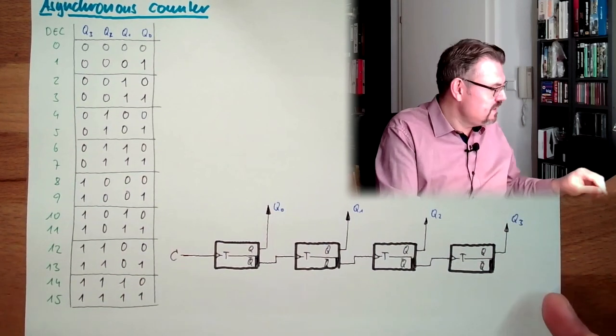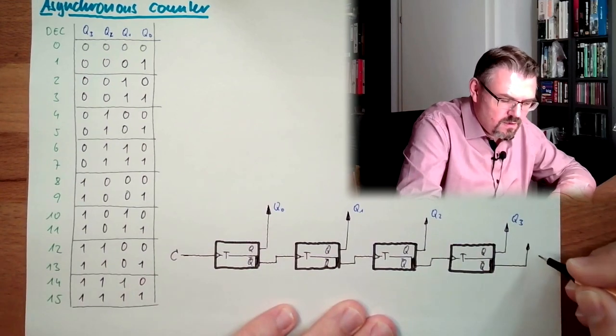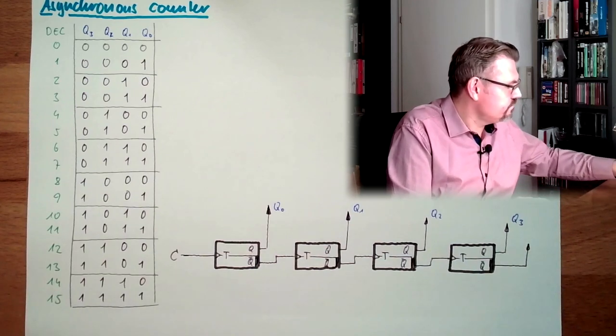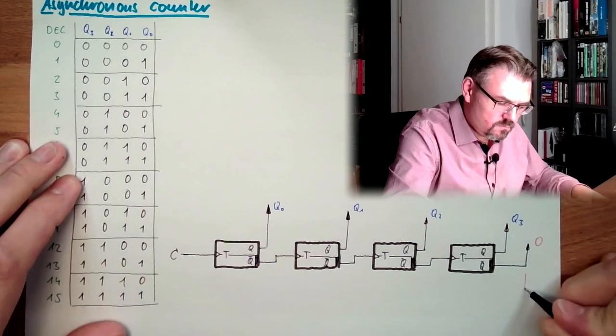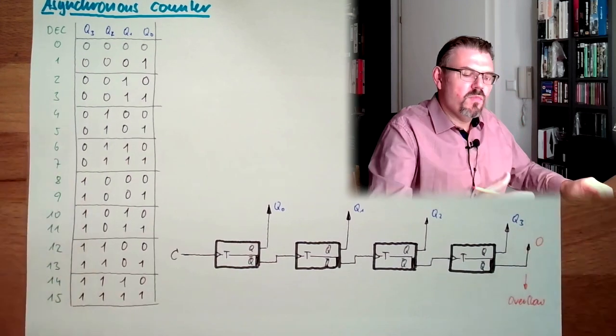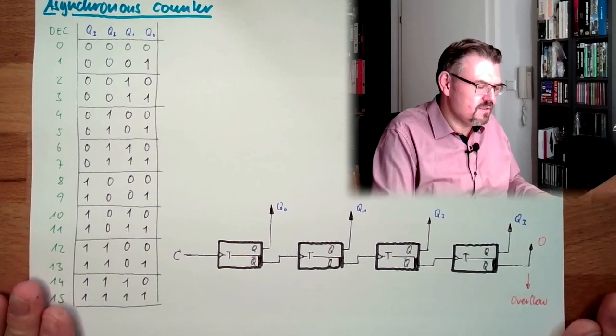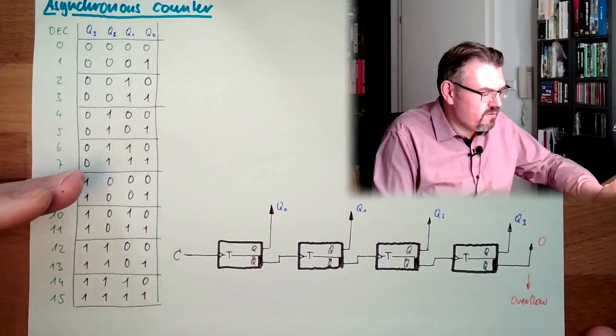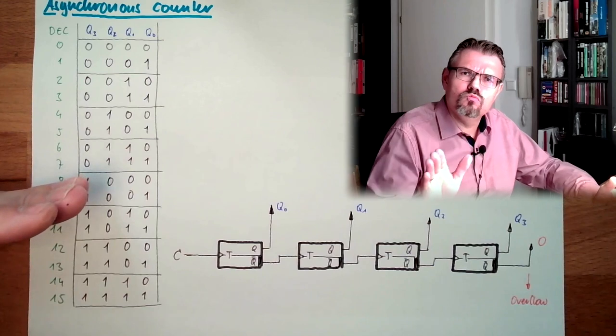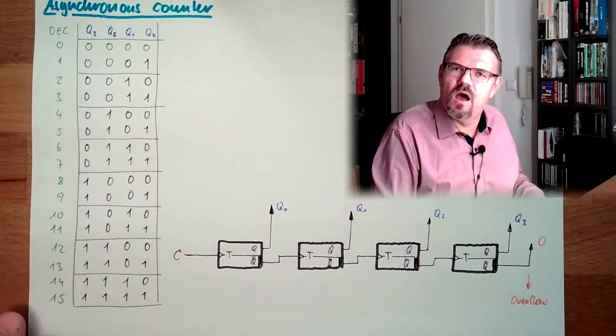And now, what is with the rest? Well, we can bring it out again as some sort of overflow. So here we have the overflow, overflow information, maybe for the next digit. This is not all, because imagine we are counting to 8, and then we want to say, hello, we want to start again. I don't want to count to 15 and then start at 0. How to do this?